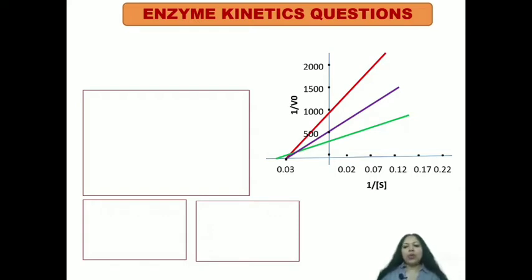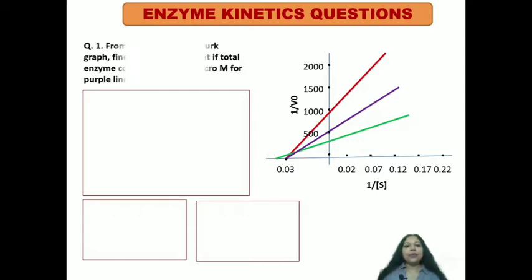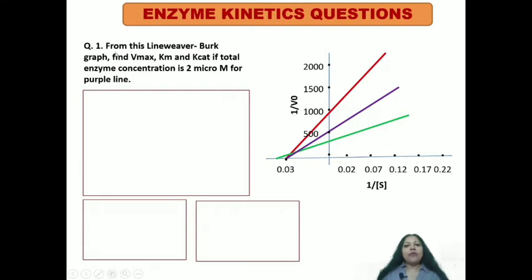In this video, we will discuss a few questions related to the Lineweaver-Burk plot. The first question is: from the Lineweaver-Burk graph, find Vmax, Km, and Kcat if the total enzyme concentration is 2 micromolars for the purple line.